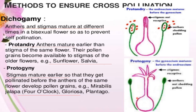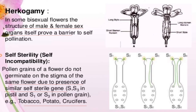Protogyny is where the stigma matures earlier so that it gets pollinated before the anther of the same flower develops pollen grains. Examples are Mirabilis jalapa (four o'clock plant) and Gloriosa. Herkogamy is where in some bisexual flowers the structure of the male and female sex organs itself provides a barrier for self pollination.